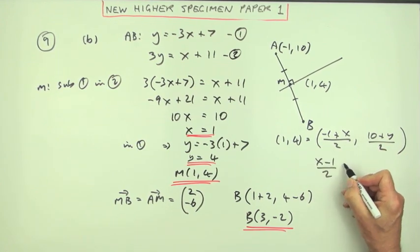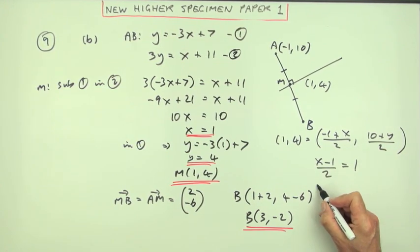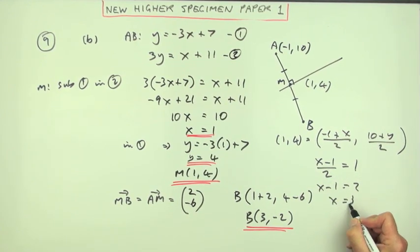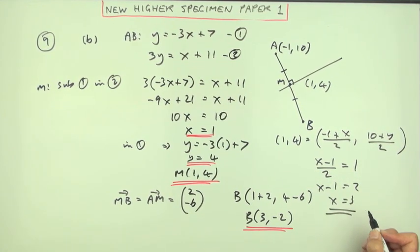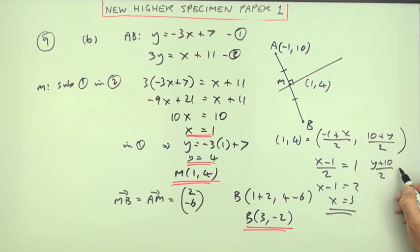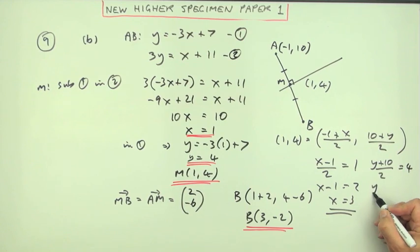Still quite a bit of work. You've got (x - 1)/2 makes 1, so x - 1 equals 2, so x equals 3. Another equation, (y + 10)/2 should make 4, so y + 10 should make 8.